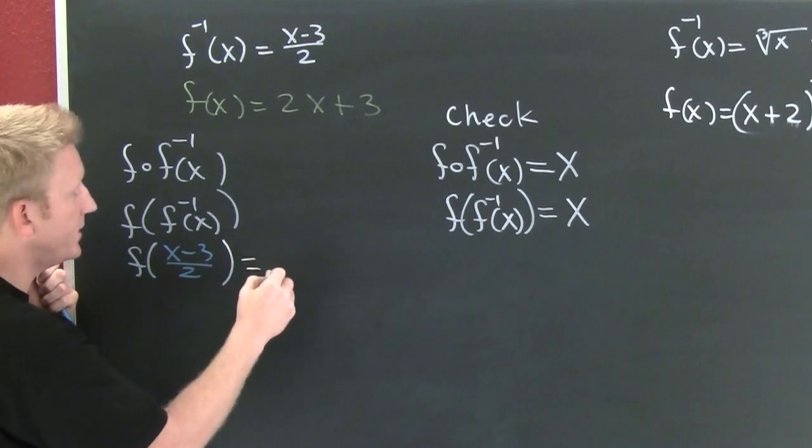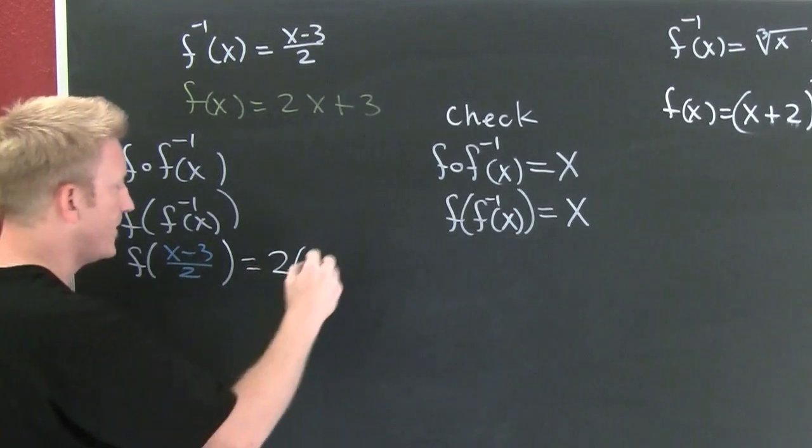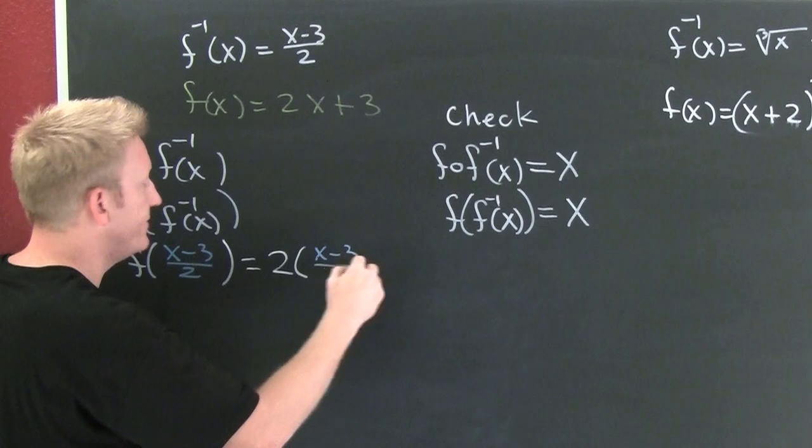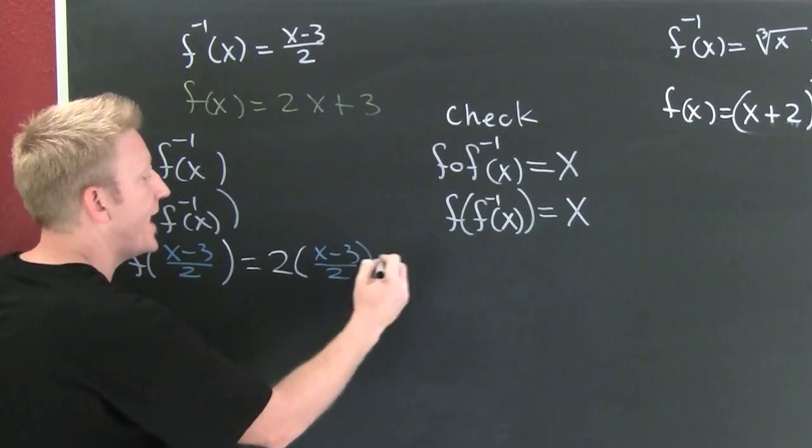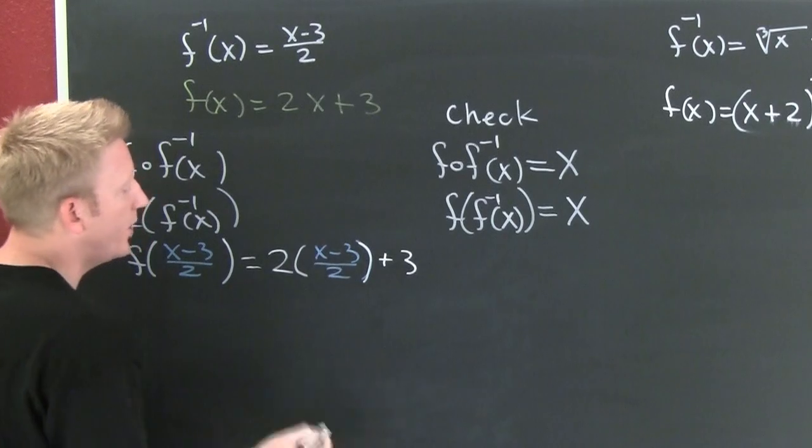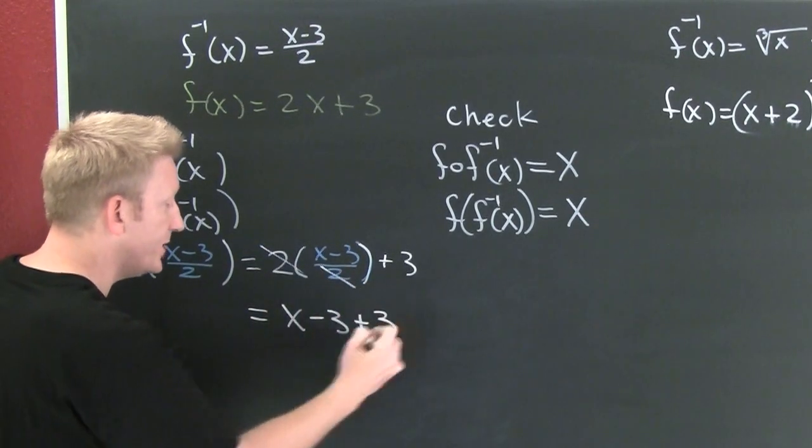So then, everywhere I see an x in f of x, I'm going to put this. So this is going to be 2 times, wait for it, x minus 3 divided by 2. In addition to that, I'm going to put a 3.